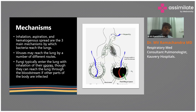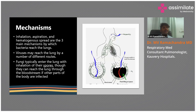Hematogenous spread, as the name suggests, means the infection originates somewhere else — from some other viscera — spreads through blood, reaches the lung as septic emboli, and causes pneumonia. These are the usual mechanisms.